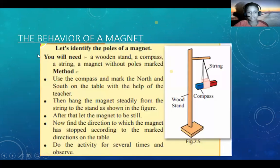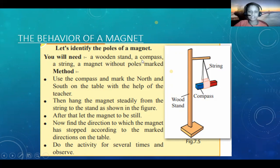The behavior of a magnet. Let's identify the poles of a magnet. You will need a wooden stand, a compass, a string, and a magnet without poles marked.